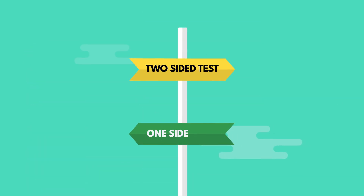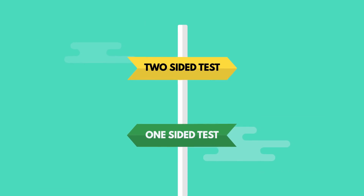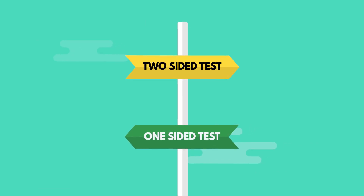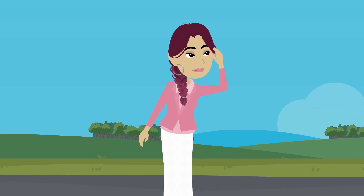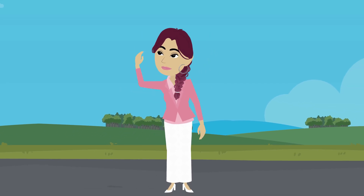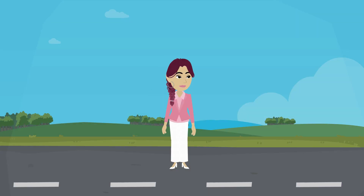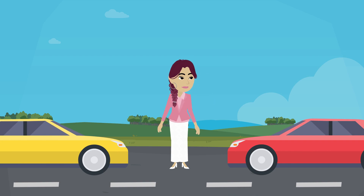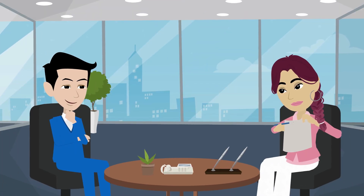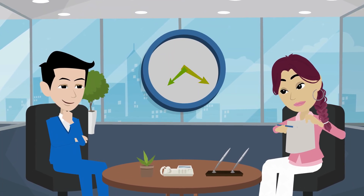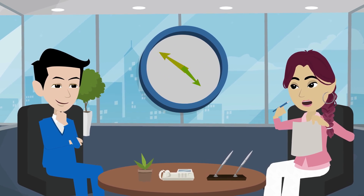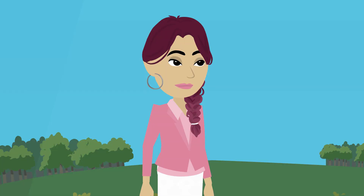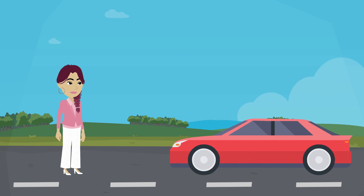It should be intuitive that a two-sided test will typically require a larger sample size than a one-sided test. Think of it like crossing a street. A two-sided test is like crossing a two-way street — traffic can come from both directions, so you need to look left and right. Just as looking both ways takes extra time, a two-sided test requires a larger sample size to detect an effect in either direction accurately. On the other hand, a one-sided test is like crossing a one-way street — you only need to look in one direction.